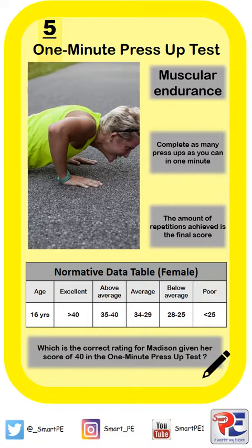The amount of repetitions that they achieve is obviously their final score. I'd like you to now apply your knowledge to the data table below and the scenario at the bottom of this slide. Read the question and can you work out what rating our 16 year old female athlete Madison would achieve? Is there any useful information you can highlight in the question, or in the data table itself? Press pause now and have a go at that particular question.